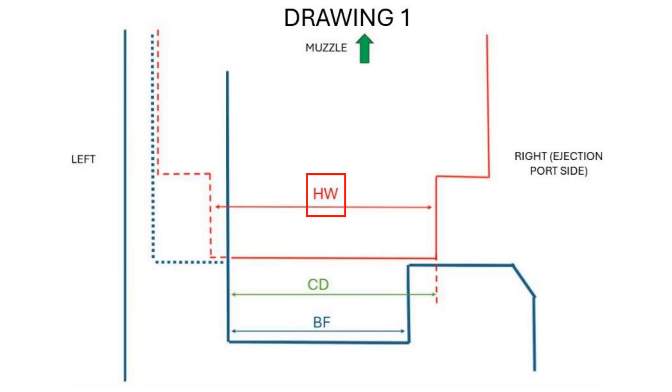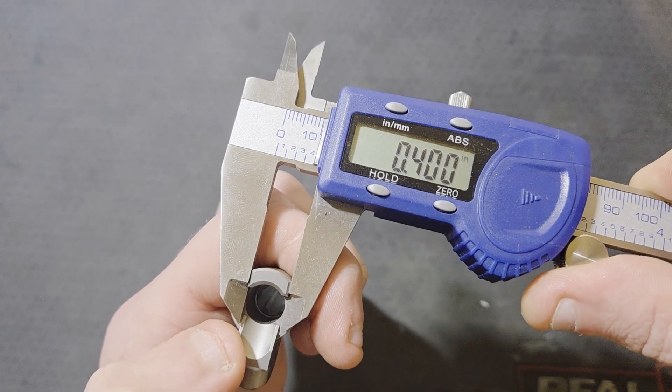Next is the hood width. I've seen this abbreviated as HW or HD. I'm going to call it HW. This one is right at 400 thousandths wide.